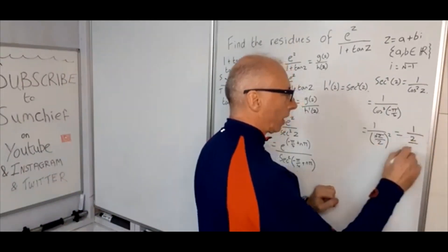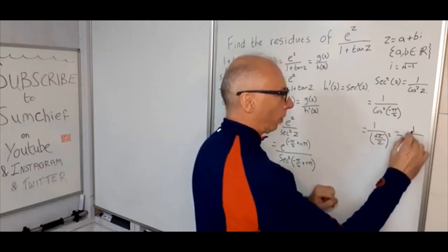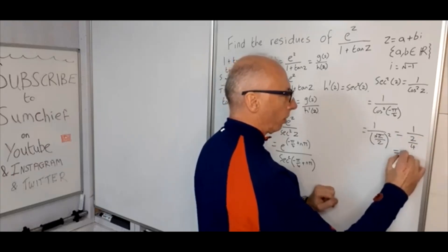And then 2 squared is 4. So that's 1 over (2 over 4), which is just going to yield 4 over 2, which equals 2.